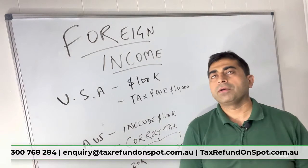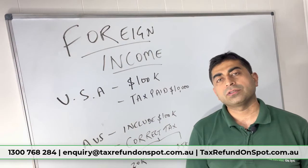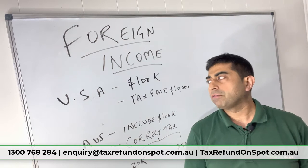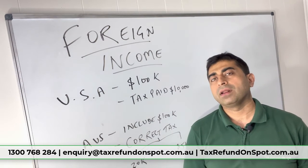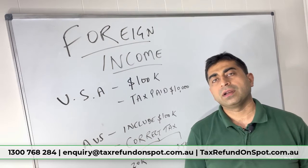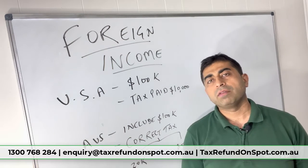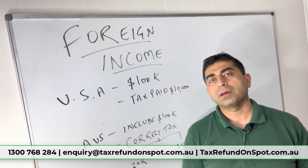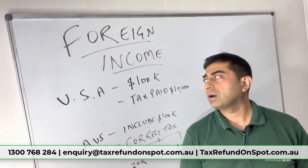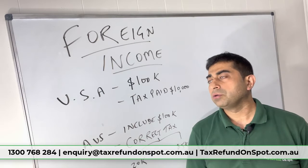Hello everyone, the topic for today is foreign income tax offset. I've taken an example in which, just for example, you are a resident for tax purposes in Australia, and you have generated some income in the United States of America and you made a hundred thousand dollars over there.